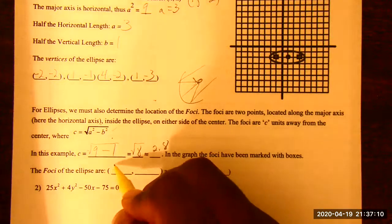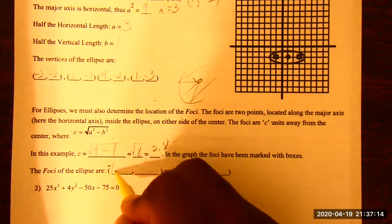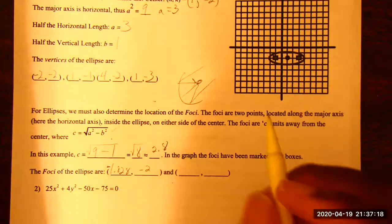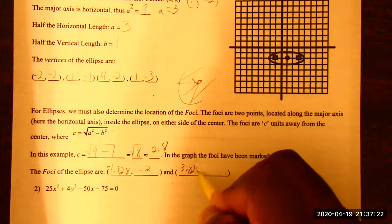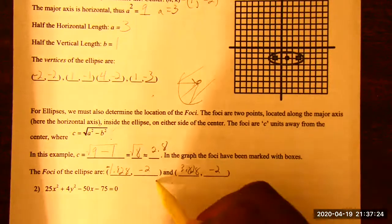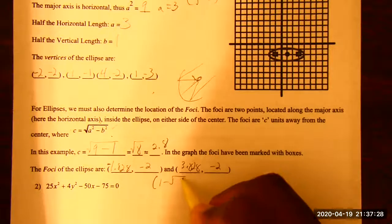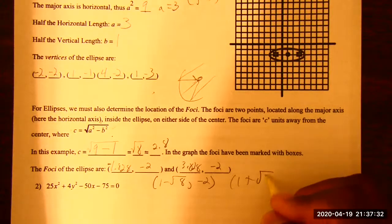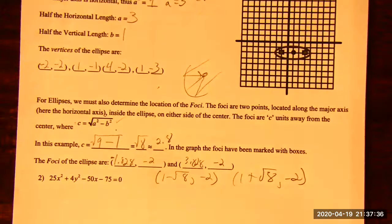I'm going to write the calculated decimals, 1.828 comma negative 2, and 3.828 comma negative 2. Another way to write these foci is if you do 1 minus square root 8 comma negative 2, and 1 plus square root 8 comma negative 2.